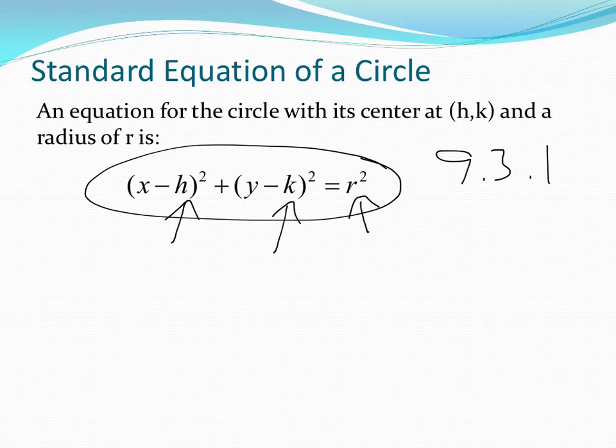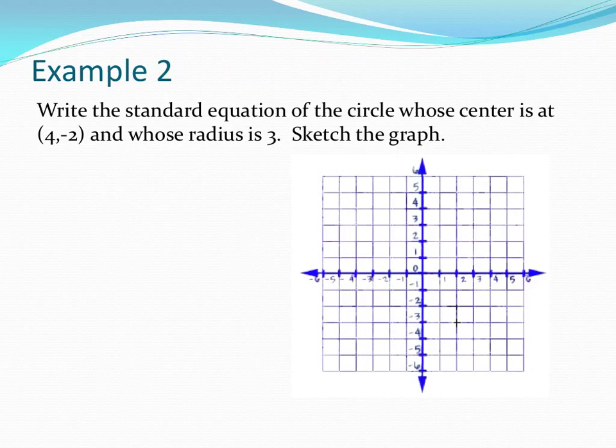For this problem, we want to write the standard equation of the circle, as well as graph it. Now we're given the center is 4, negative 2, and the radius is 3. So let's write down our standard equation for a circle and plug in what we know.